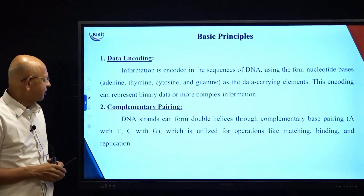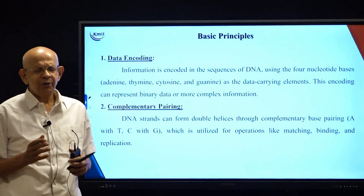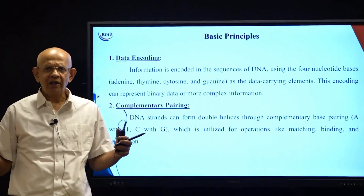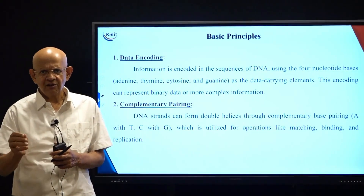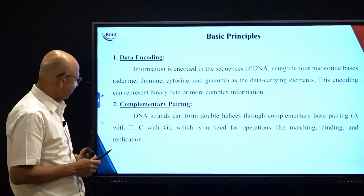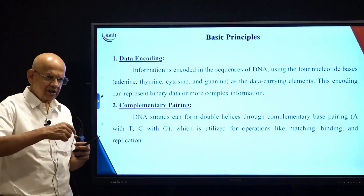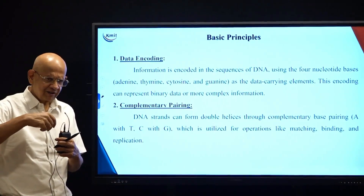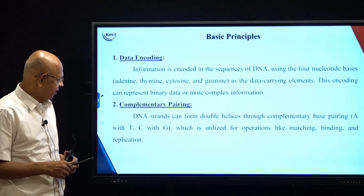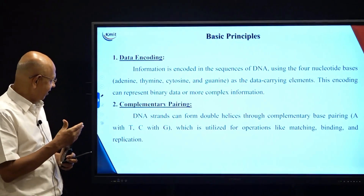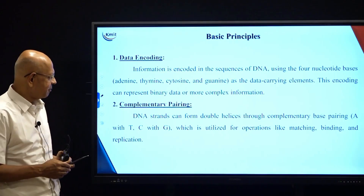Biocomputing is used for data encoding because there are four nucleotide bases: A, T, C, G. You can take a binary sequence and encode a pair of binary digits as A, T, C, or G. We will see examples of that. We all know that DNA consists of double helices, wrapped around histones, with A, T, C, G as the basic nucleotides which we can utilize for computation.